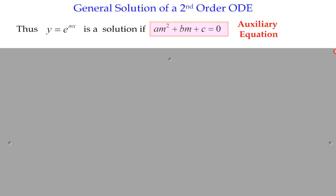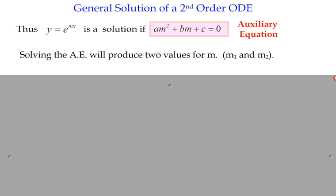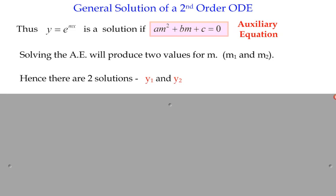Because we have a quadratic auxiliary equation, we'll potentially end up with two values for m, perhaps one if there are repeated roots, or perhaps even a complex solution. Say we end up with two distinct values: if m equals 2 and m equals 3, then our solutions y1 would be e^(2x) and y2 would be e^(3x).